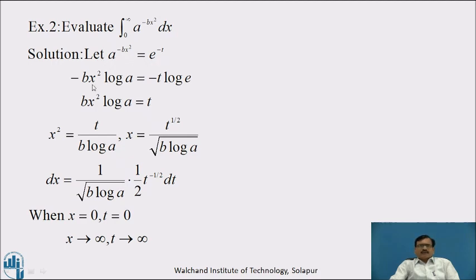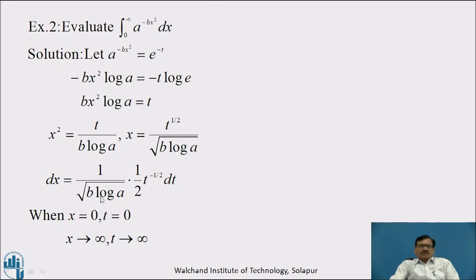Taking logarithm on both sides, we get minus bx square log a equal to minus t log e. Simplifying, bx square log a equal to t, because log base e of e is 1. Solving for x square, we get x square equal to t divided by b log a, that is, x equal to t raised to 1 by 2 divided by square root of b log a. Therefore, dx equals 1 by square root of b log a into 1 by 2 t raised to minus half dt.